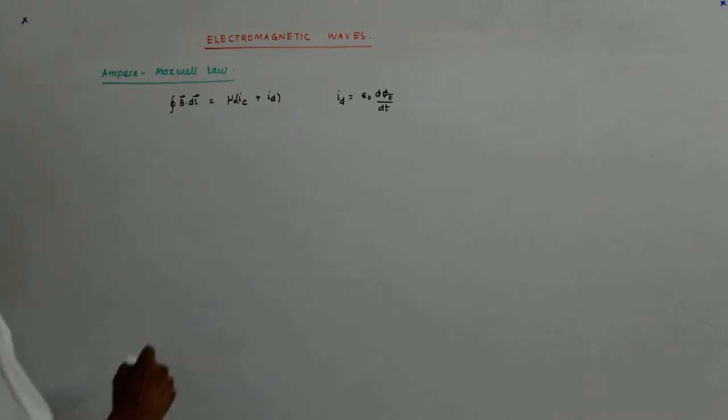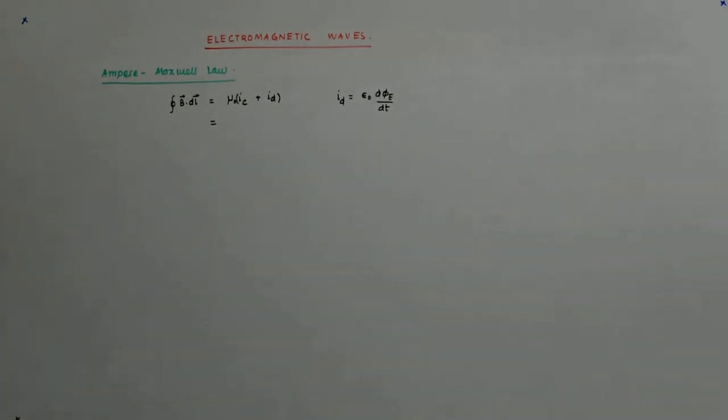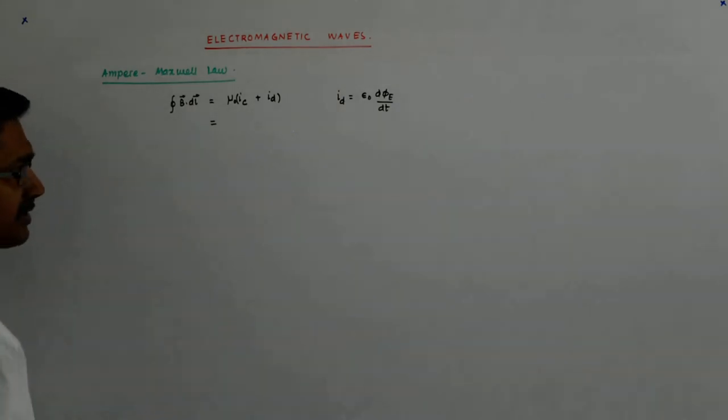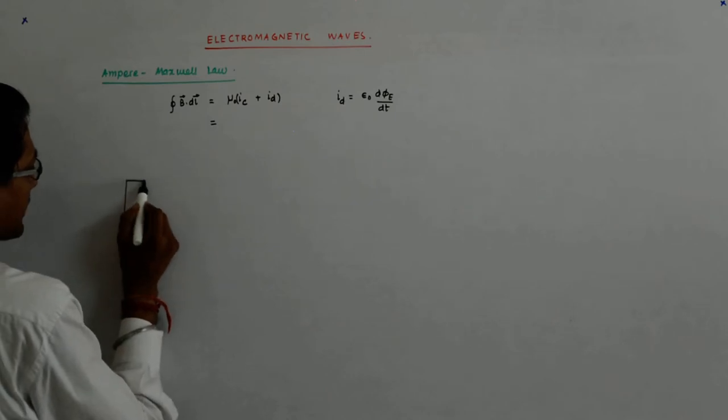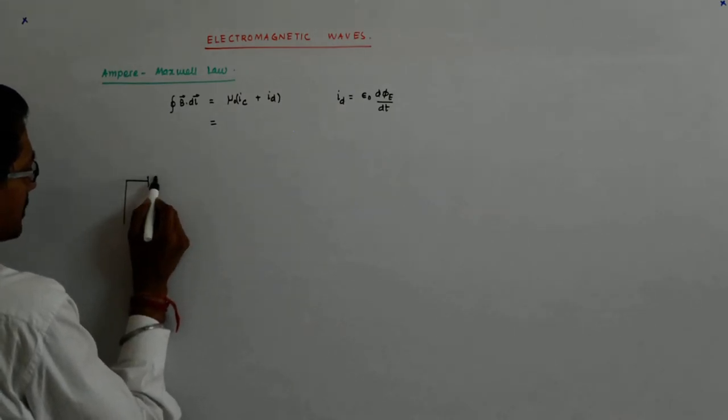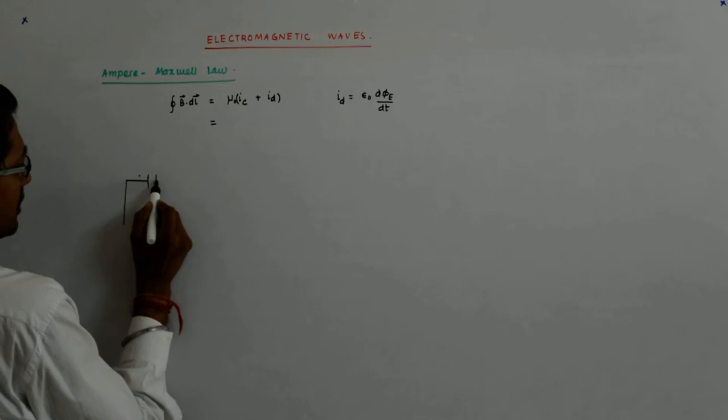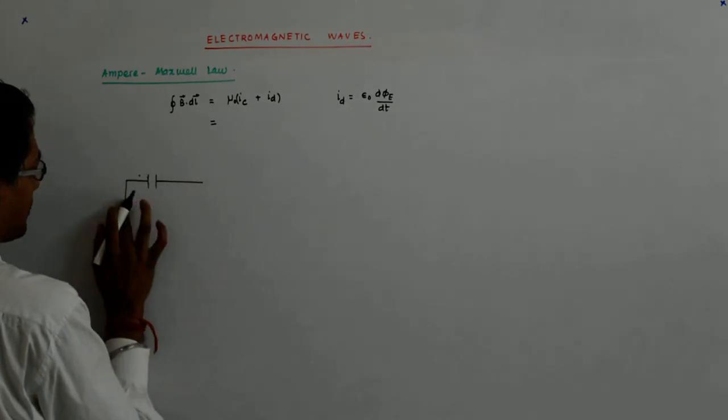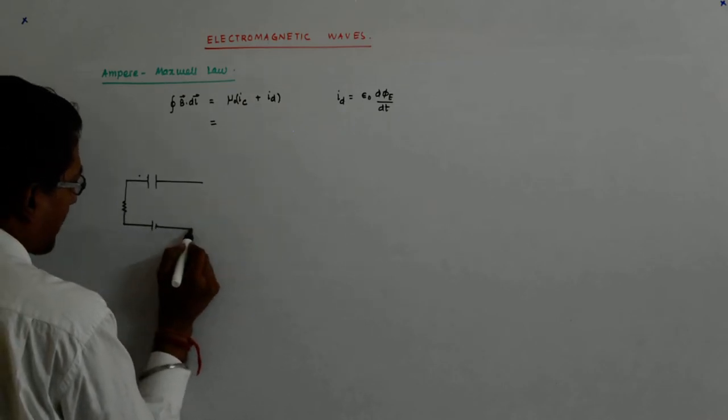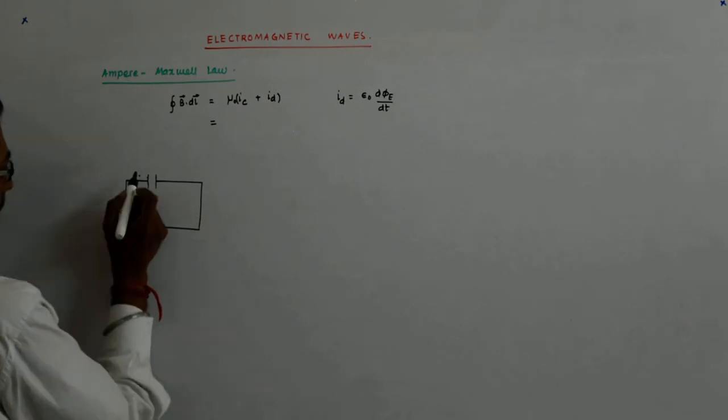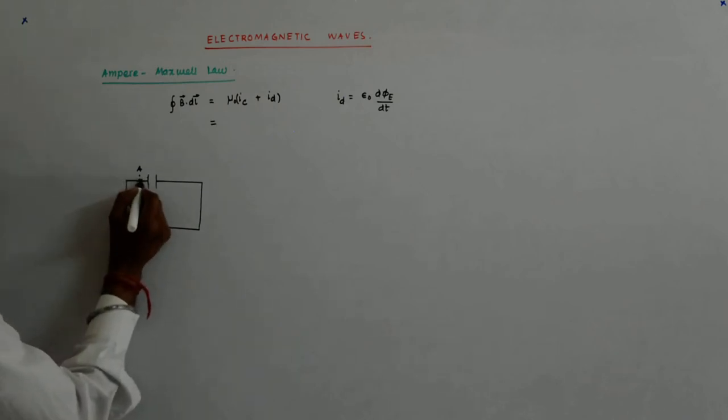And why did it all arise in the first place? For the simple reason that he had set out to calculate the magnetic field, say at this point, when this capacitor was charging.